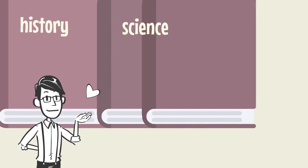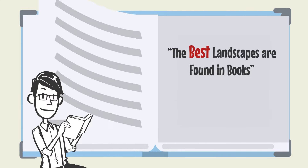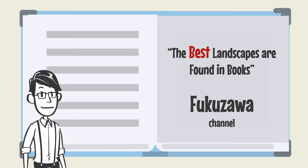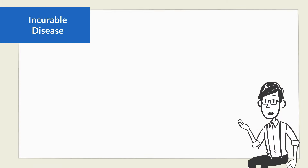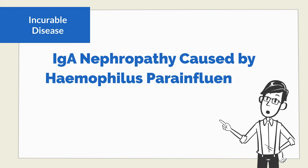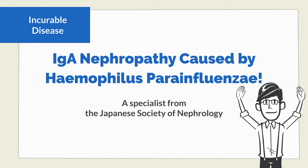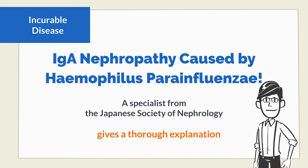Hello, I'm Fukuzawa from The Best Landscapes Are Found in Books. The title of this video is Incurable Disease: IgA Nephropathy Caused by Haemophilius Parainfluenzae. A specialist from the Japanese Society of Nephrology gives a thorough explanation.